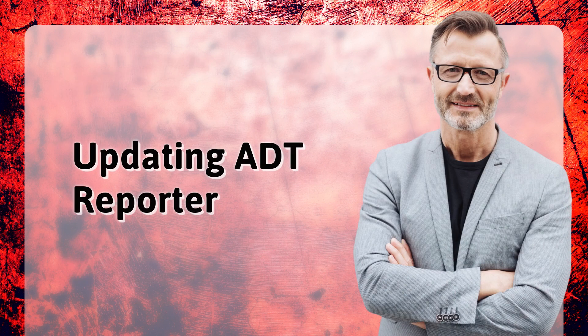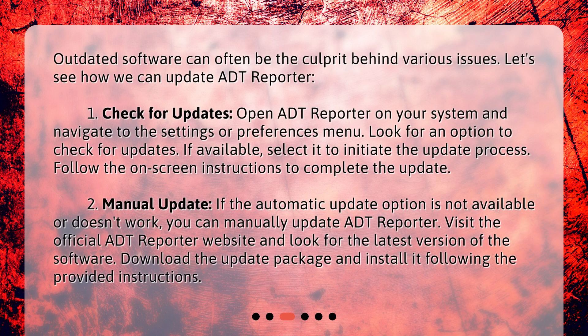Updating ADT Reporter. Outdated software can often be the culprit behind various issues. Let's see how we can update ADT Reporter. Check for updates: Open ADT Reporter on your system and navigate to the Settings or Preferences menu. Look for an option to check for updates. If available, select it to initiate the update process. Follow the on-screen instructions to complete the update.